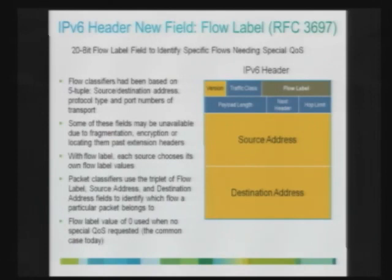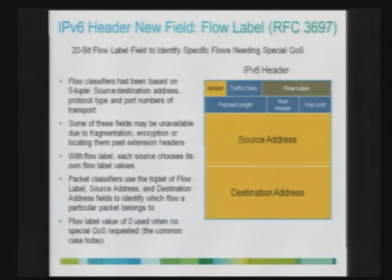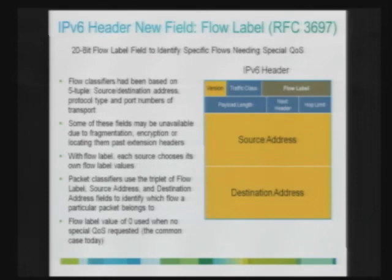One thing not yet mentioned is the 20-bit flow label introduced in IPv6, which makes it easier for source and intermediate routing nodes to identify a particular flow. Traditionally in IPv4, we used the tuple of source address, destination address, protocol type, and port numbers to identify a flow. With IPv6 packets having multiple extension headers, that becomes cumbersome. Instead, the source can define a value for the 20-bit flow label — combined with source and destination address — to identify a flow. If an application is not using the flow label, a value of zero is used.